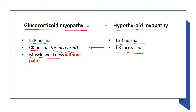The most important differentiating point is that glucocorticoid myopathy and hypothyroid myopathy both present with muscle weakness — but in glucocorticoid myopathy it is without pain, while in hypothyroid myopathy there is muscle pain. Step 2 always asks questions using these two differentiating points. If you see a question about hypothyroid myopathy, you will always see muscle pain, but not in glucocorticoid myopathy.